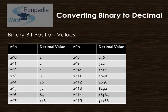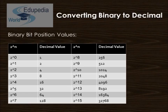Now let's look at the first conversion: converting binary to decimal. A binary number is a number stored in memory in its raw format, ready to be used in a calculation. Each bit position in a binary number represents a power of 2. There are many occasions when we need to find the decimal equivalent of a binary number.